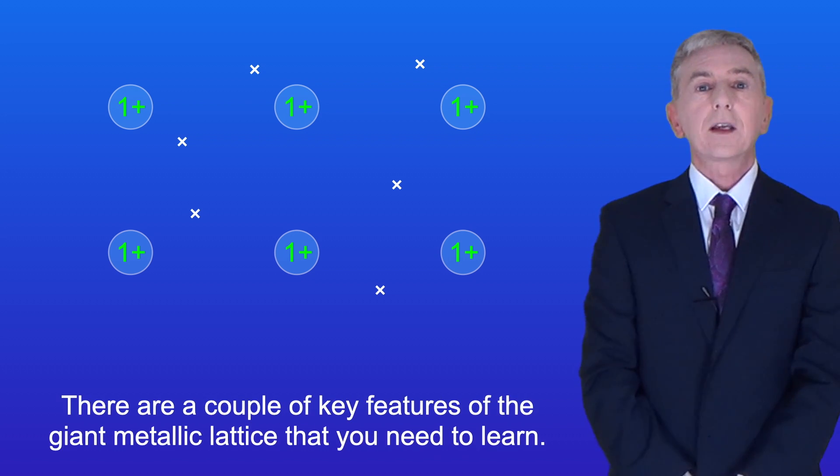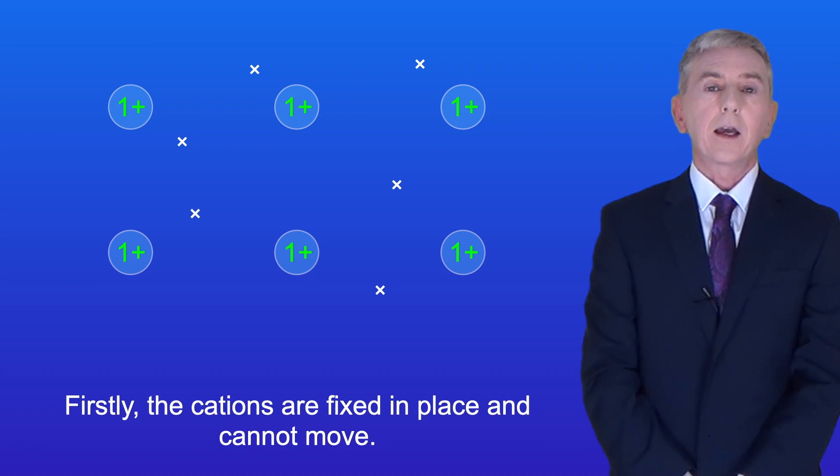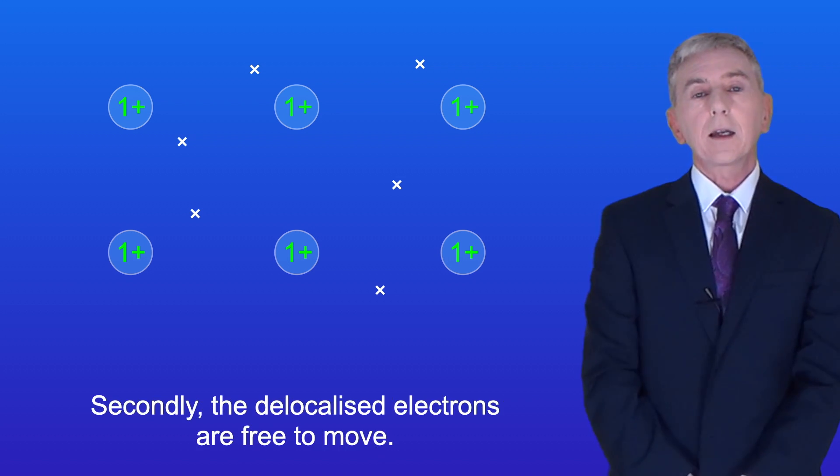Now there are a couple of key features of the giant metallic lattice that you need to learn. Firstly, the cations are fixed in place and cannot move. Secondly, the delocalized electrons are free to move.